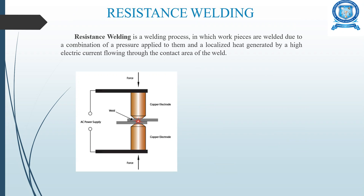Resistance welding is a welding process in which workpieces are welded due to a combination of pressure applied to them and a localized heat generated by a high electric current flow through the contact area of the weld. In the diagram you have an upper copper electrode and a bottom copper electrode.